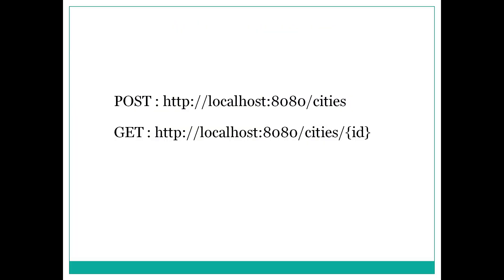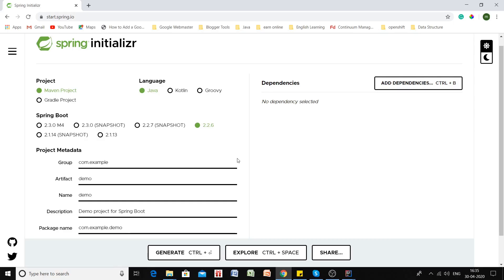To demonstrate how Hibernate second-level cache works, we will create a Spring Boot application consisting of two REST APIs. One will be a POST API which will simply save a city to the database, and the other will be a GET API which will fetch the city for a given ID. We will then verify whether the data is being fetched from the database or from the cache.